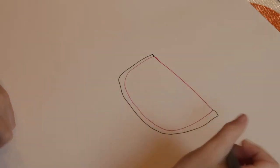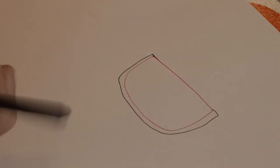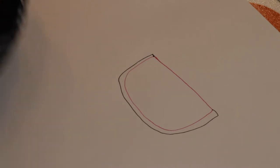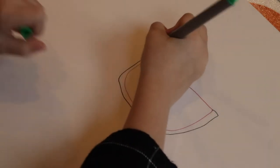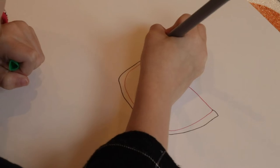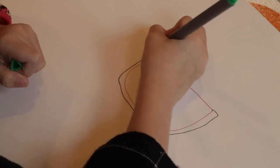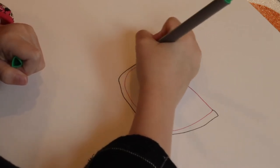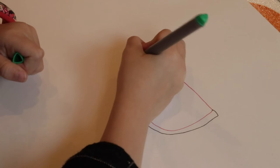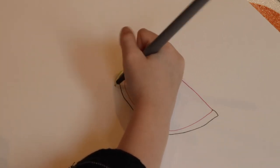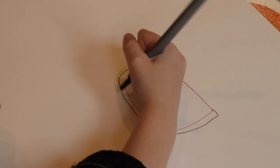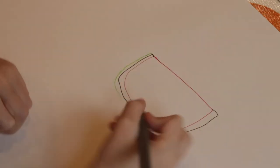Then go back in, and then you'll need your green. What you'll have to do with your green, you can do the outline first or you can just color it in green if you want to first. Now I'm doing the outline.